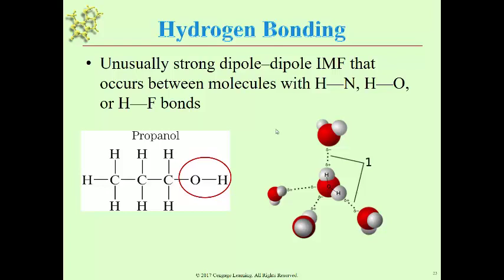When we look at organic molecules, we're looking at the functional groups present — as mentioned before when we talked about organic molecules. Any alcohol would be capable of producing hydrogen bonding.